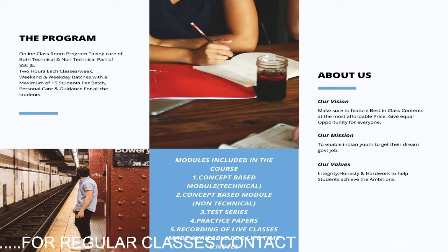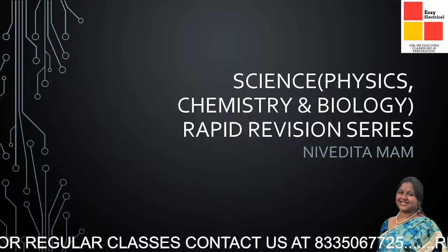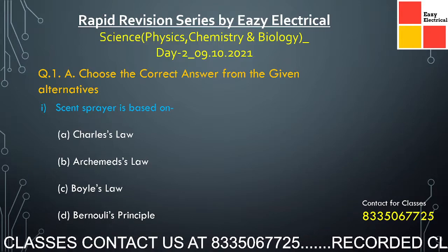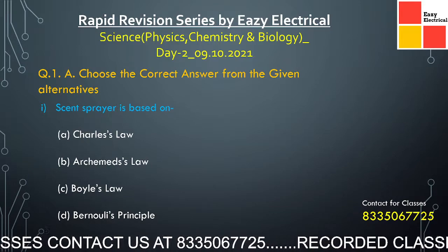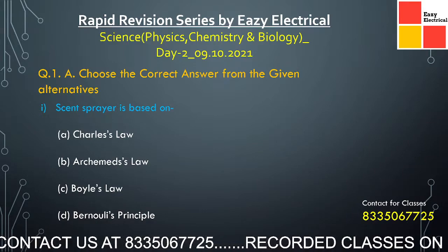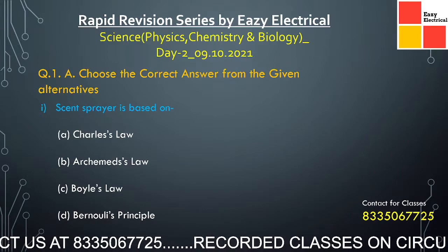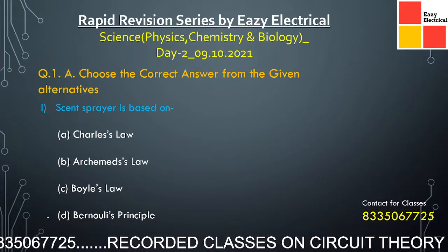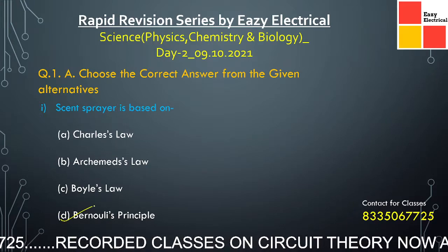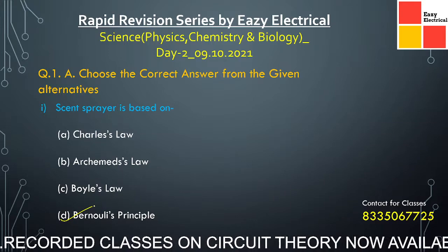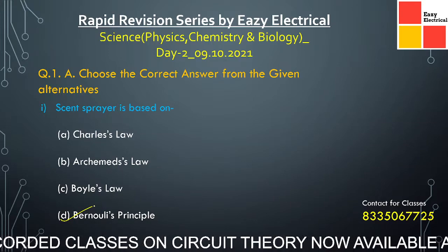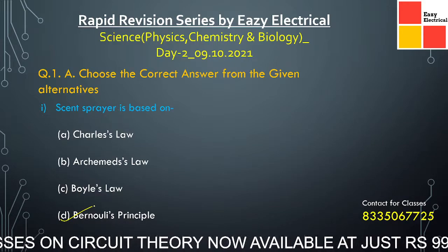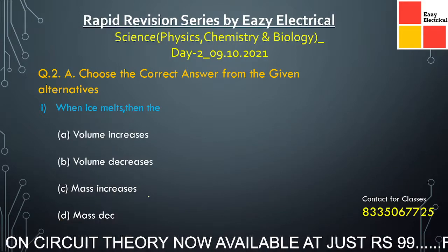The first question: a sprayer is based on which principle — Charles's Law, Archimedes' Law, Boyle's Law, or Bernoulli's Principle? The correct option is Bernoulli's Principle. It states that the increase in the velocity of the fluid during flow results in a simultaneous decrease in the pressure of the fluid. A sprayer works on this principle.